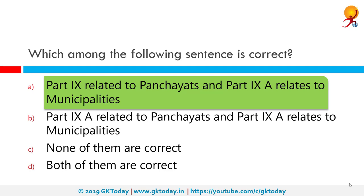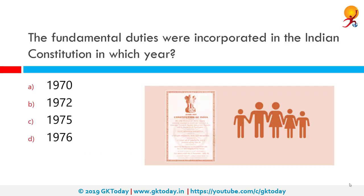Which among the following sentences is not correct? The statement that Part 9 is related to panchayats and Part 9A relates to municipalities is not correct. Part 9A is related to both panchayats and municipalities. The fundamental duties were incorporated in the Indian constitution in which year? The correct answer is 1976. The fundamental duties of citizens were added by the 42nd Amendment in 1976, upon the recommendation of the Swaran Singh Committee constituted by the government that year.